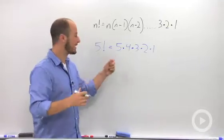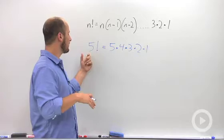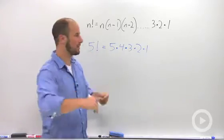So multiplying this out, five times four is 20, times three is 60, times two is 120. So five factorial is 120.